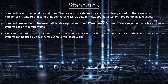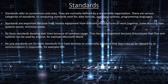De-facto standards develop over time because of common usage. They become important because they ensure that files and systems can be used by anyone, for example Microsoft Word. De jure standards are de-facto standards that have become so universally accepted that they have to be obeyed or communication is impossible, for example PDF.